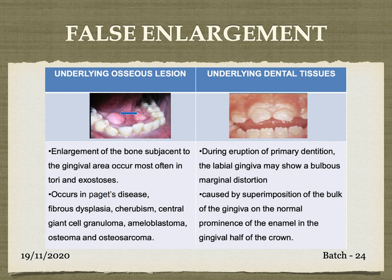Regarding underlying dental tissues — during eruption of the primary dentition, the labial gingiva may show a bulbous marginal distortion. It is caused by superimposition of a bulk of the gingiva on the normal prominence of the enamel in the gingival area of the crown. Basically, it is not a true gingival enlargement but rather due to the crown or tooth protruding into the gingiva.